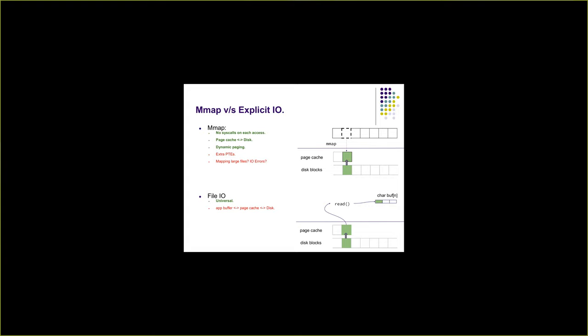Another advantage is that any writes now just go to the page cache directly. Since the virtual address of the application is mapped to the same page as the page cache, all writes we do will directly go to the page cache page that belongs to that particular disk block. It also allows us to take good advantage of dynamic paging, because the disk block that is needed will be fetched into the page cache only when the mmap is accessed.